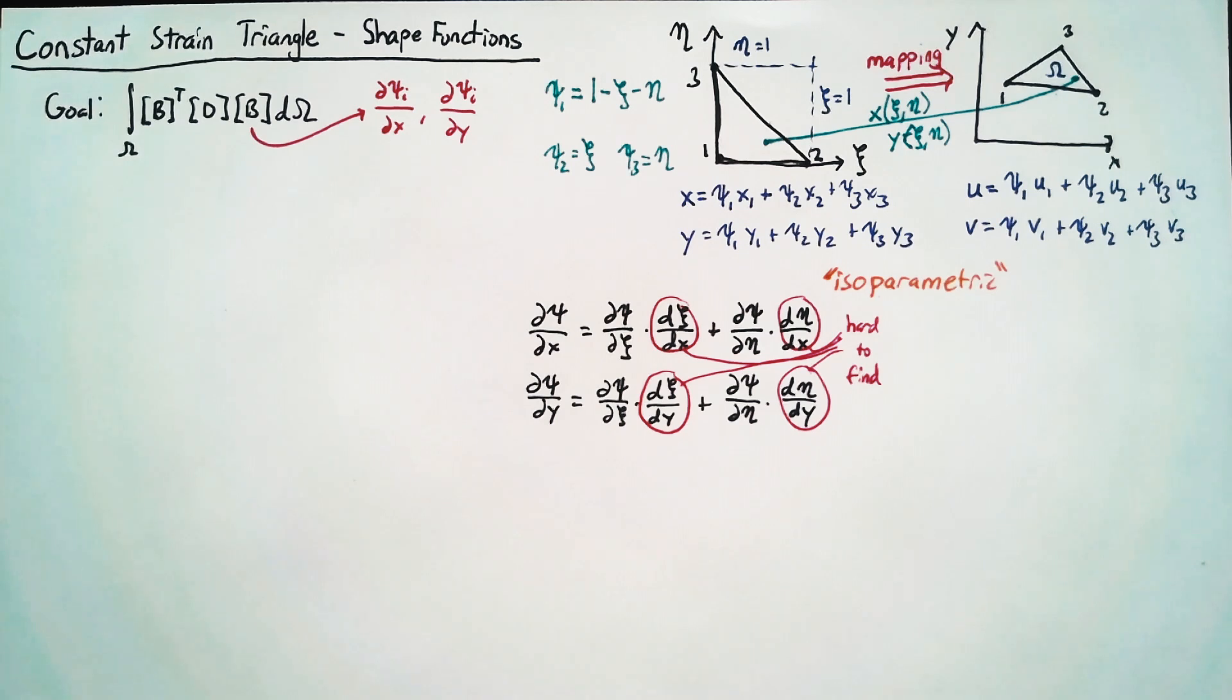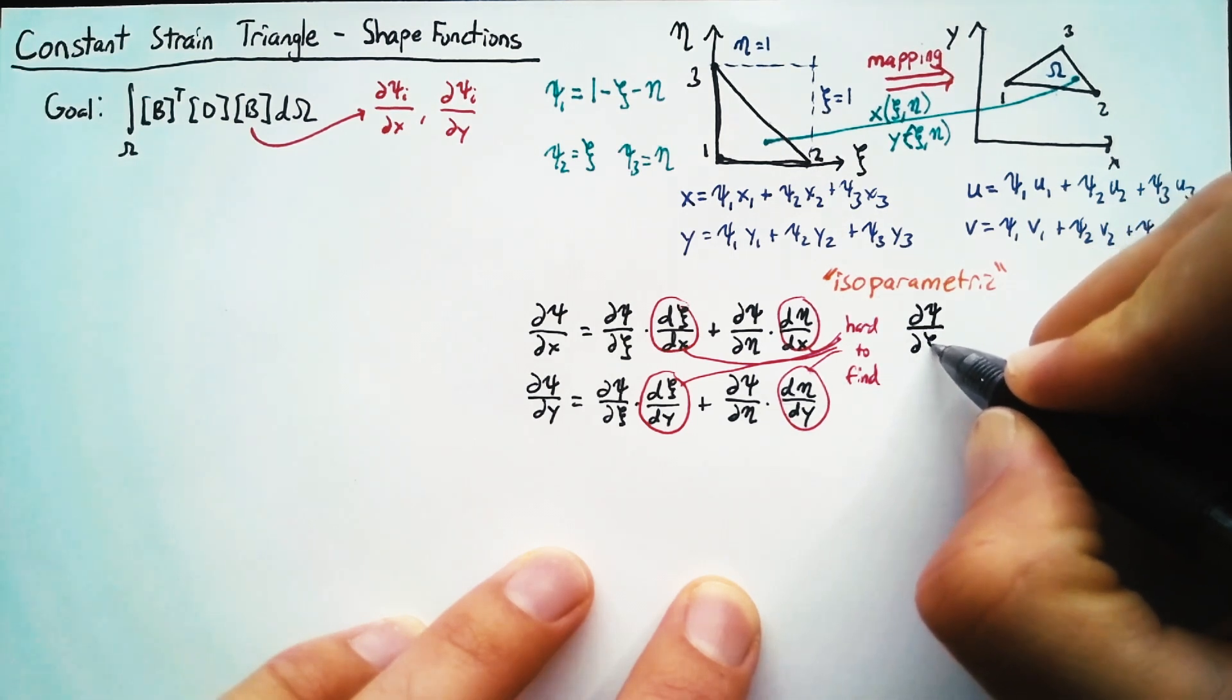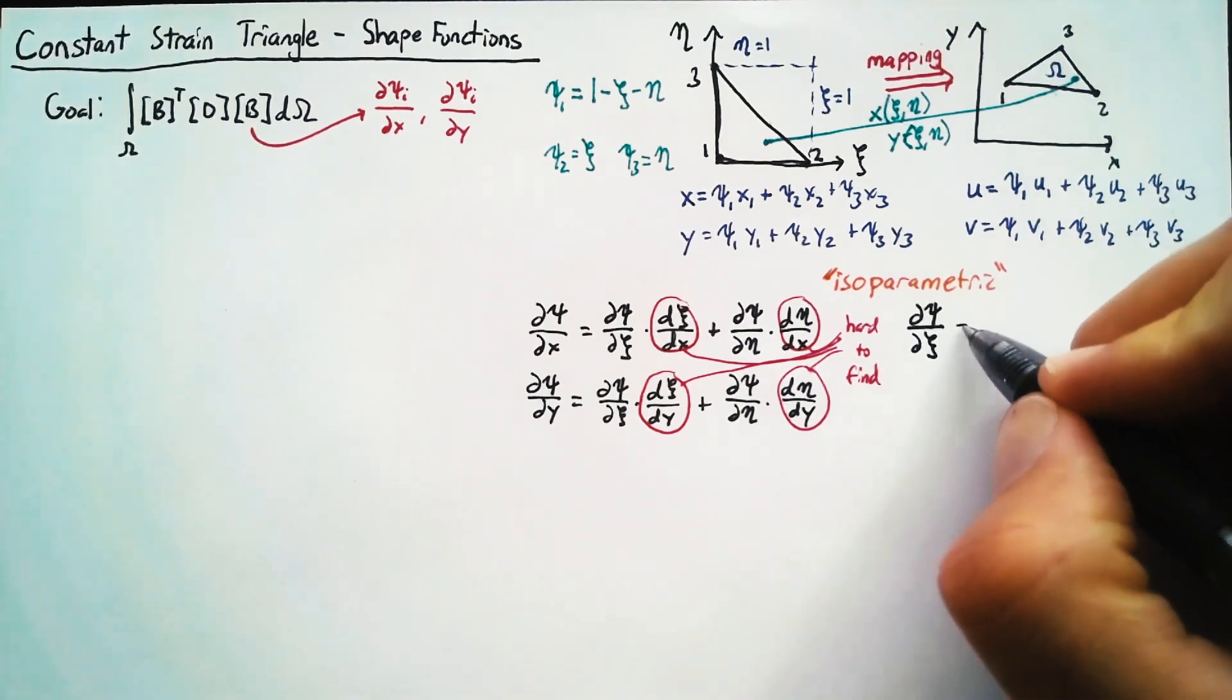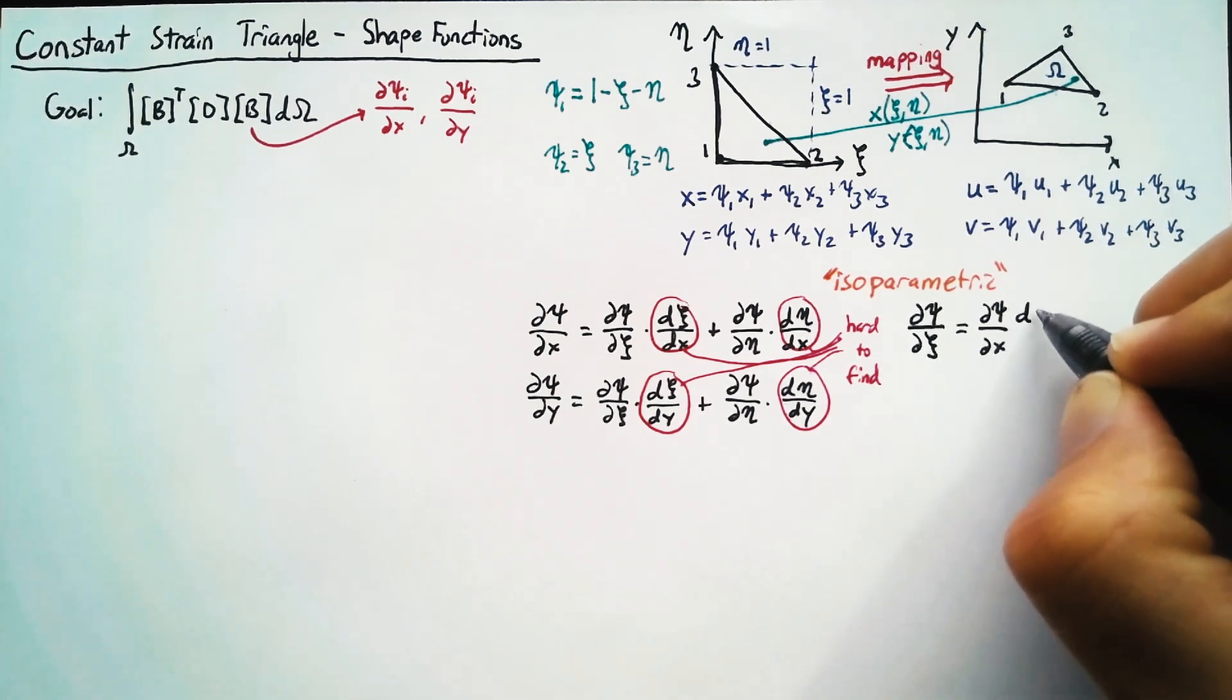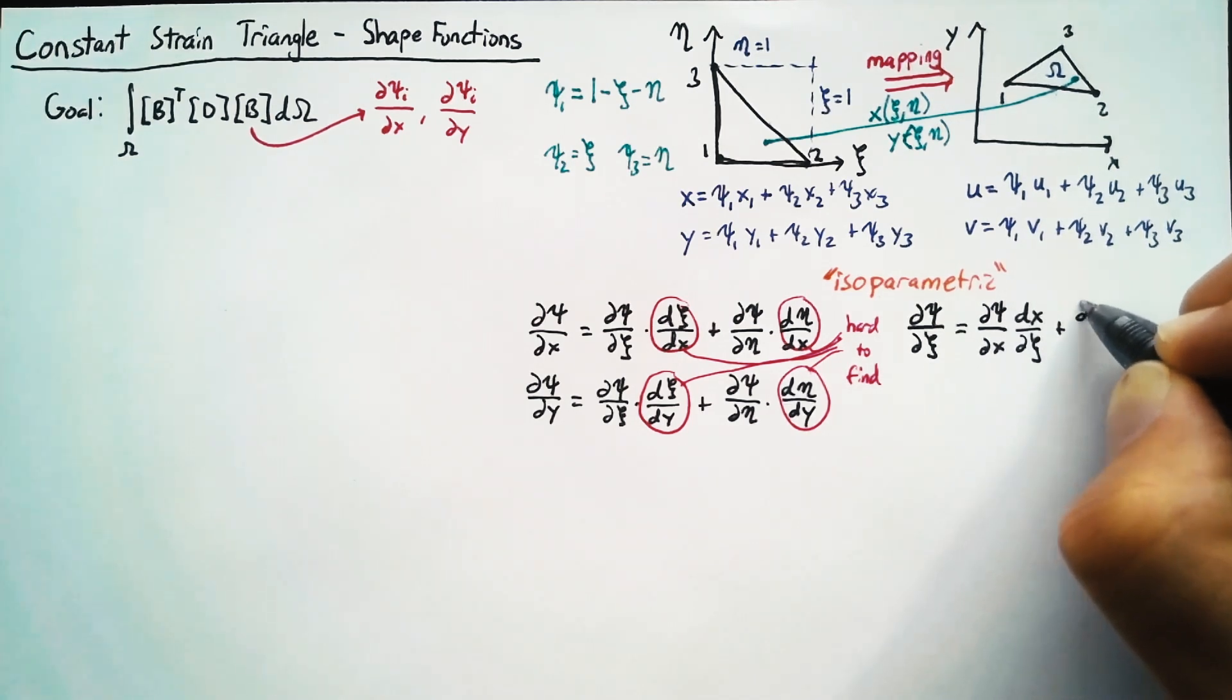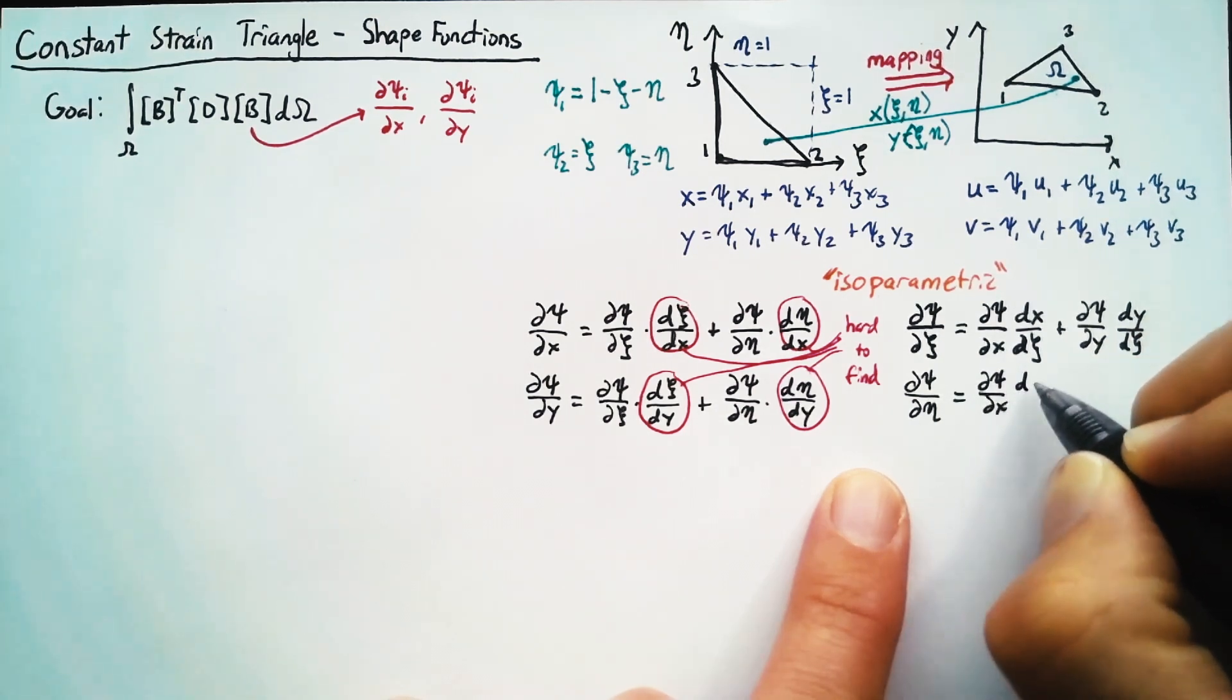Instead of using the straightforward approach where we take the chain rule here, we're actually going to have to be a little bit clever. And our cleverness in this case is actually to write the chain rule of the things that we can find easily. So we'll find dPsi/dC. And this is going to be equal to the partial of Psi with respect to x multiplied by dx/dC. And then we'll add the partial of Psi with respect to y multiplied by dy/dC. And then we'll do the same thing for eta.